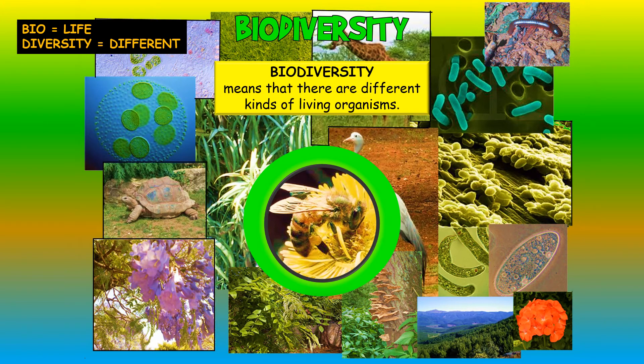For example, both a bee and a flower carry out the seven functions of living things. However, they differ in various ways.